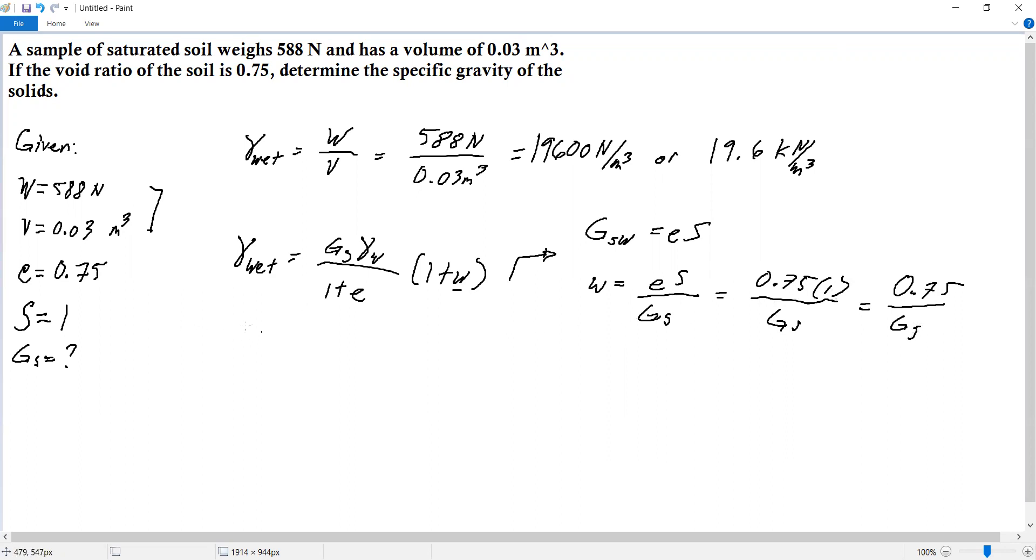Now we can substitute the values. Unit weight 19.6 is equal to Gs times unit weight of water which is 9.81, all over 1 plus 0.75, times quantity 1 plus 0.75 over Gs.